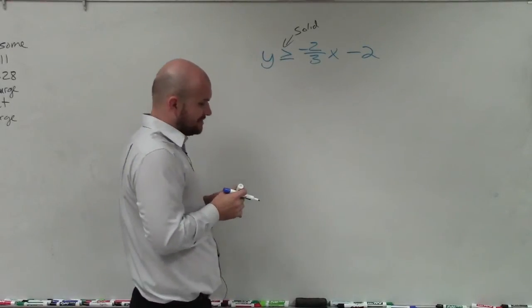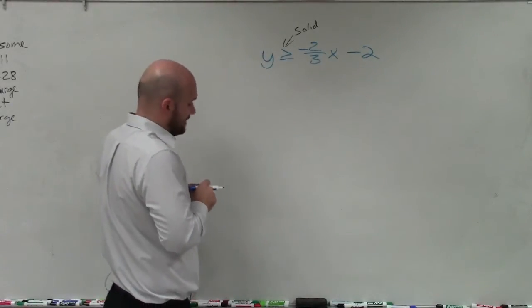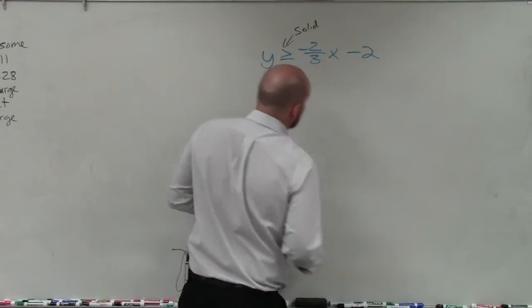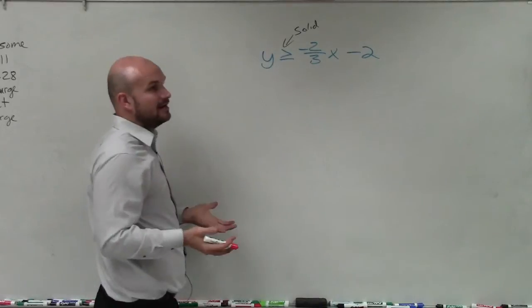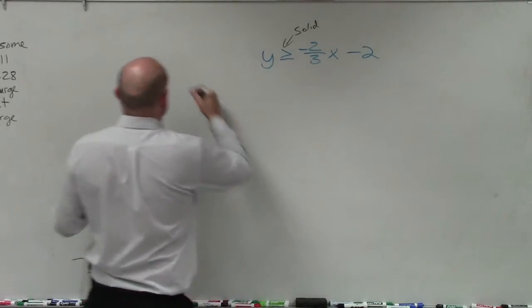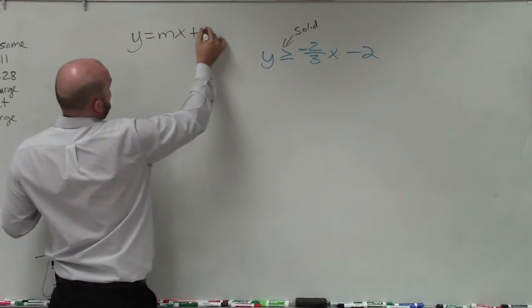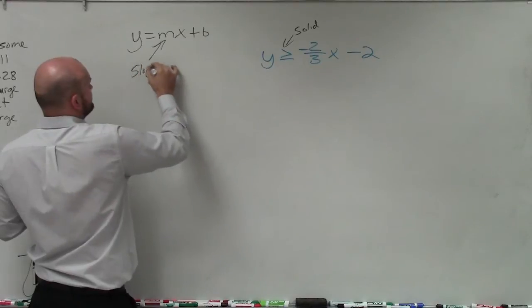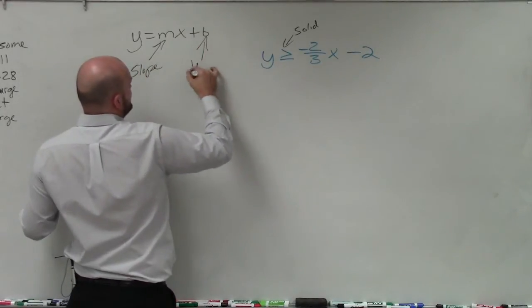Now we need to graph it. To graph a line, even if it's an inequality or an equation, when it's in this format, the easiest way to graph is using our slope-intercept form. Basically, we need slope-intercept form when we have an equation in this form so we can identify our slope and our y-intercept.